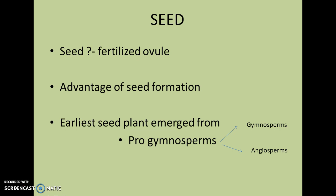Generally, each seed consists of a seed coat, some reserved food materials, and an embryo — that is, the embryonic plant in a miniature condition. The advantage of seed formation is that packing of this embryo into a self-contained seed was one of the many adaptations that freed plants from dependence on water. The evolution of seed plants represents an important milestone in the adaptation of plants to dry land.